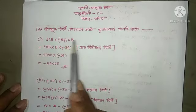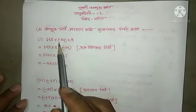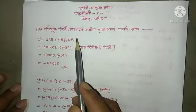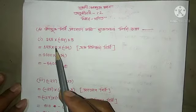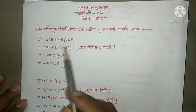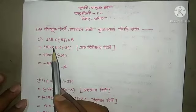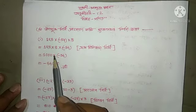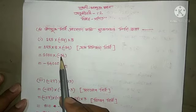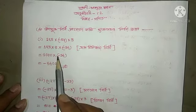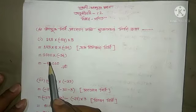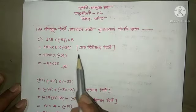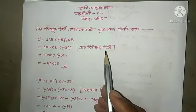First, 125 into 8 is 1000. Then 1000 into minus 54 gives minus 5400. So the answer is minus 5400.